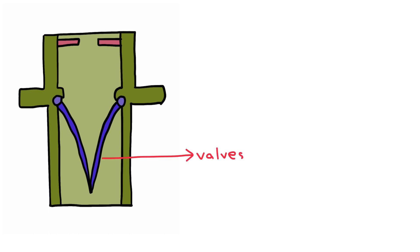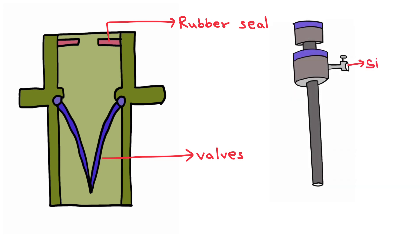Now we will move on to study the structure of a cannula. If we take a look at the cross section of a cannula, we will realize that it is not just an empty hollow cylinder. Cannulas are constructed with a one-way valve which allows introduction of instruments without the escape of gas. Additionally, there is also a rubber seal at the proximal tip to prevent the escape of gas. Some cannulae are also equipped with a side port which allows attachment of insufflation lines to introduce gas during the procedure.